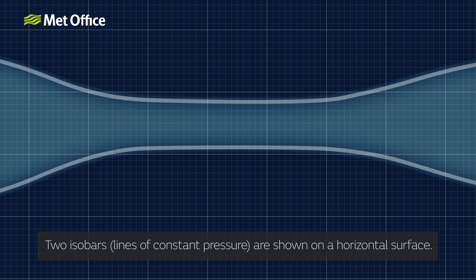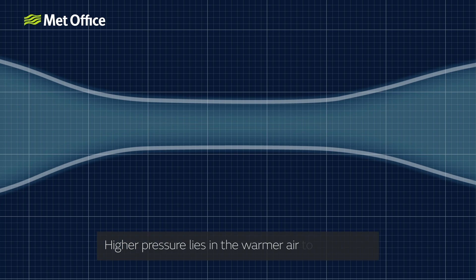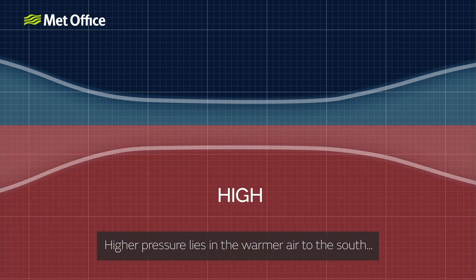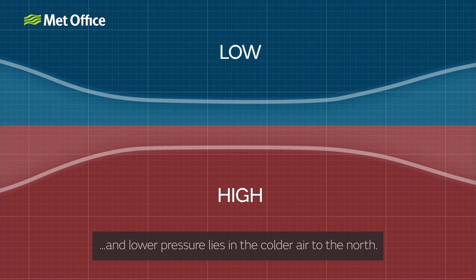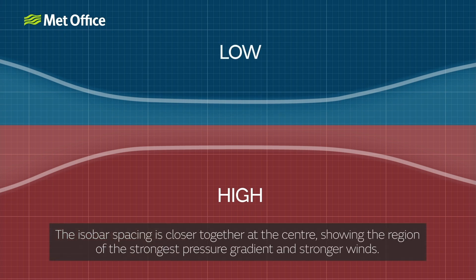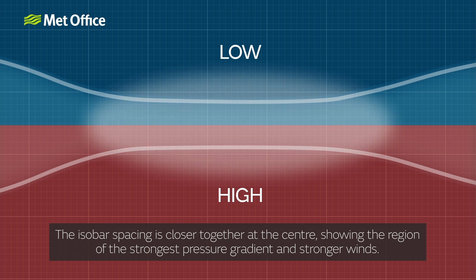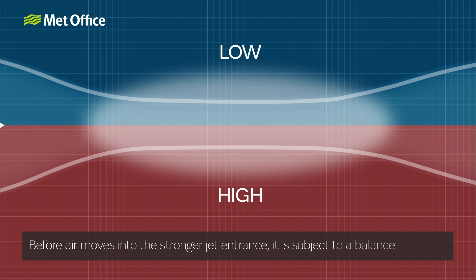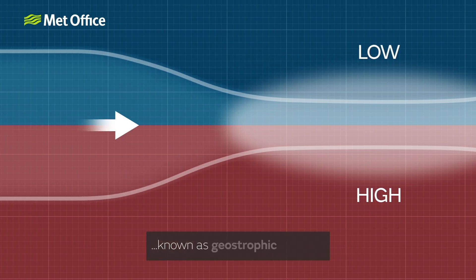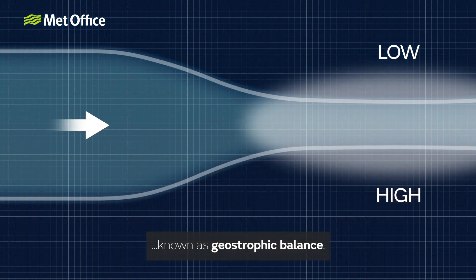Two isobars — lines of constant pressure — are shown on a horizontal surface. High pressure lies in the warmer air to the south, and lower pressure lies in the colder air to the north. The isobar spacing is closest together at the centre, showing the region of the strongest pressure gradient and stronger winds. Before air moves into the stronger jet entrance, it is subject to a balance of forces known as geostrophic balance.